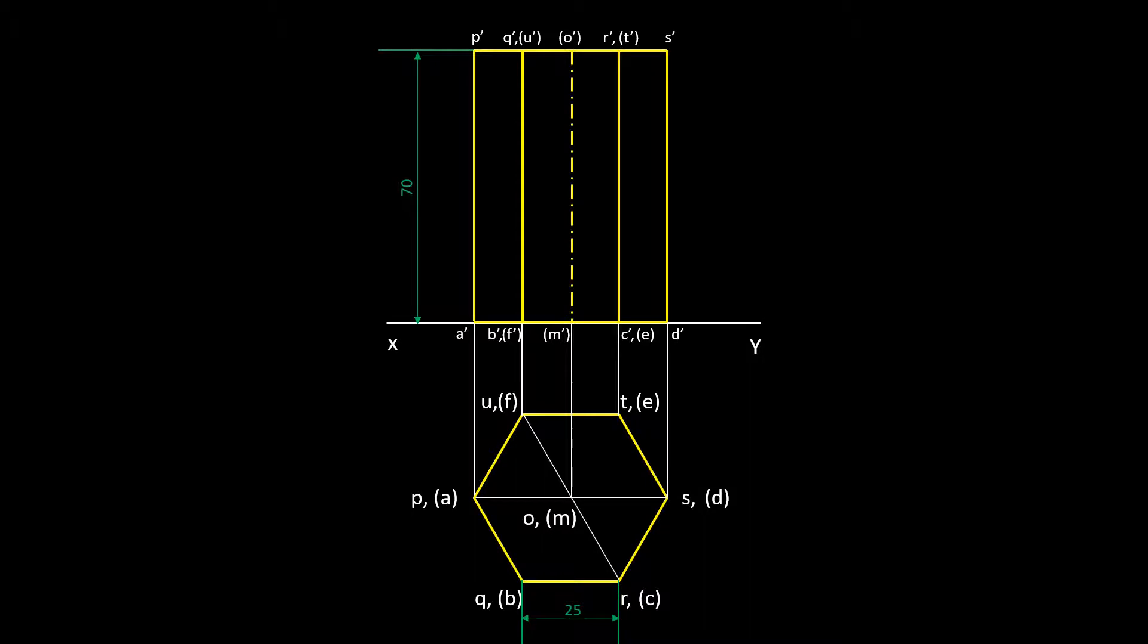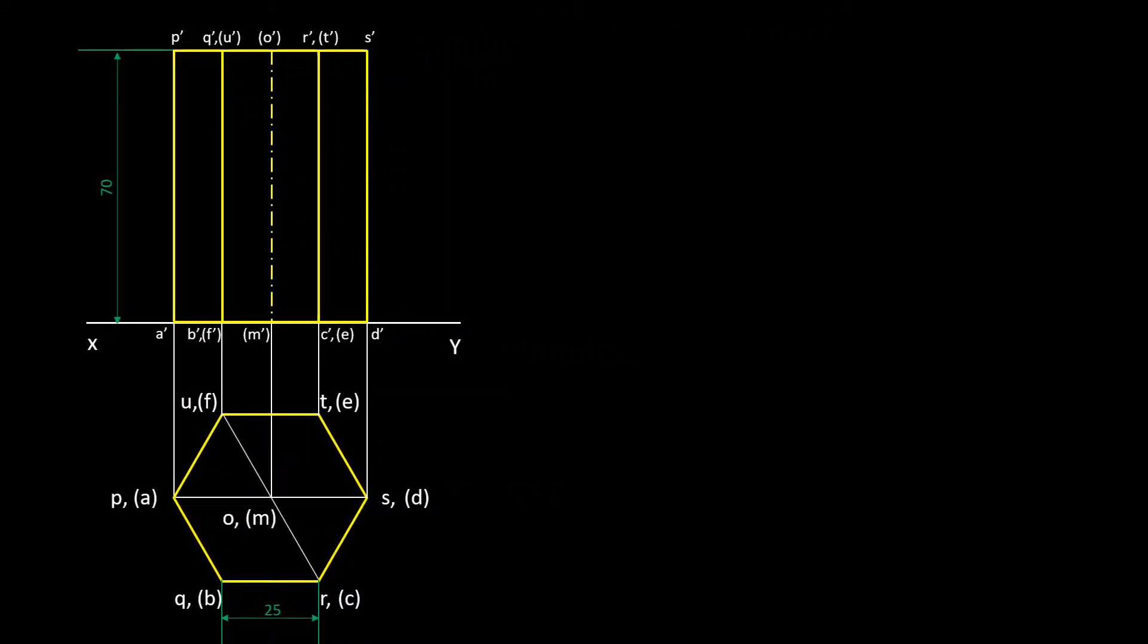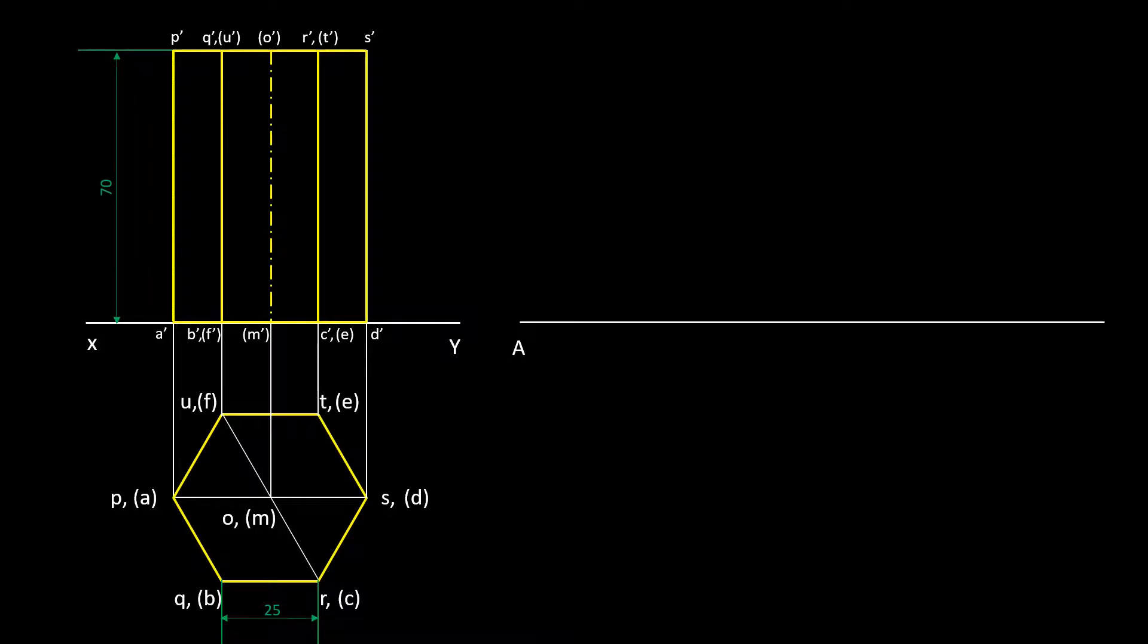Here I am going to develop the solid from the vertical edge AP. So starting from the base corner A. Let's mark the base corners on the pattern first. Take the true length of edge AB from the top view and mark it on the pattern.